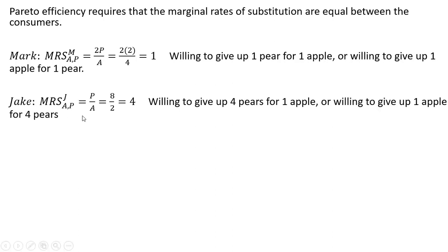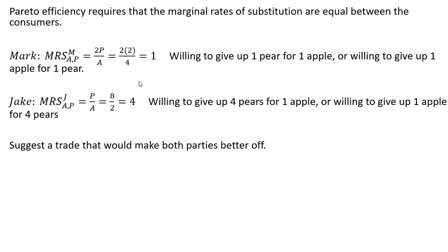Evaluating Jake's marginal rate of substitution at eight pears and two apples, we get an MRS of four. So Jake is willing to give up four pears for one apple, or one apple for four pears, holding utility constant. The marginal rates of substitution are not equal here, so this is not a Pareto efficient outcome. There are trades where one party can trade pears for the other's apples and both parties would be made better off.